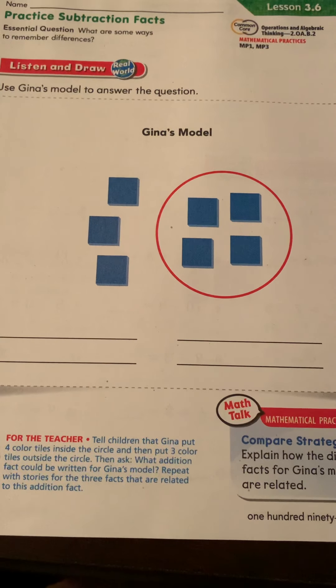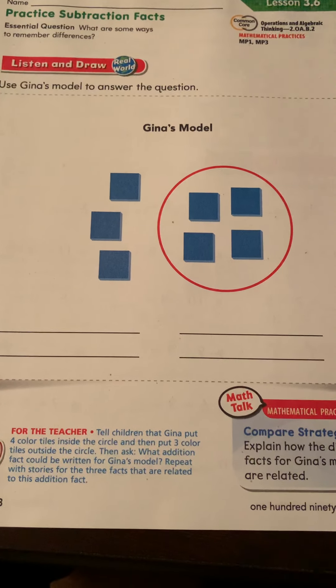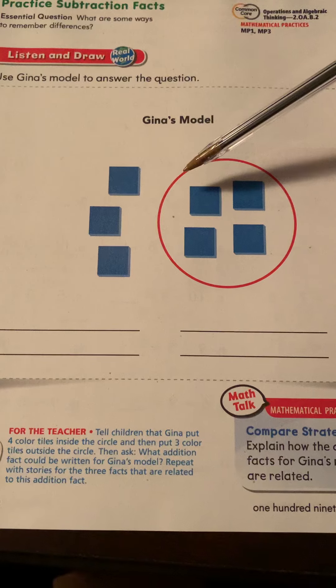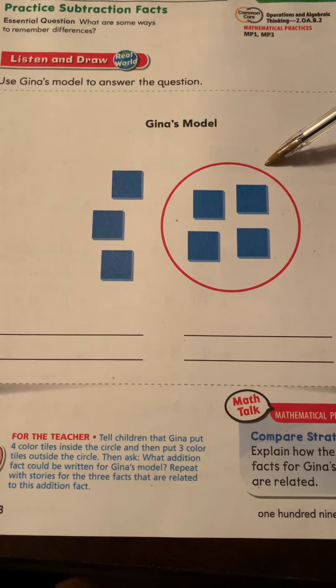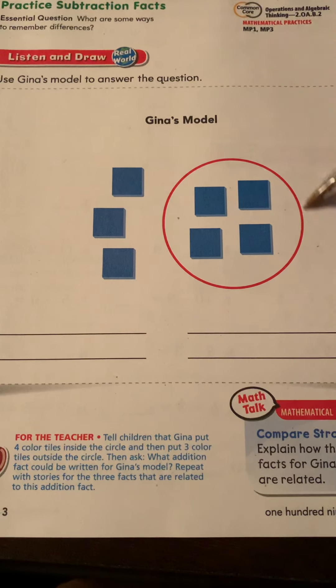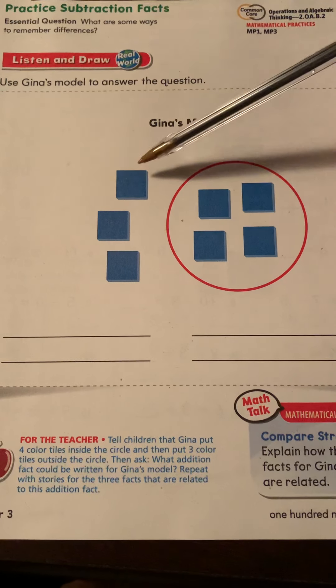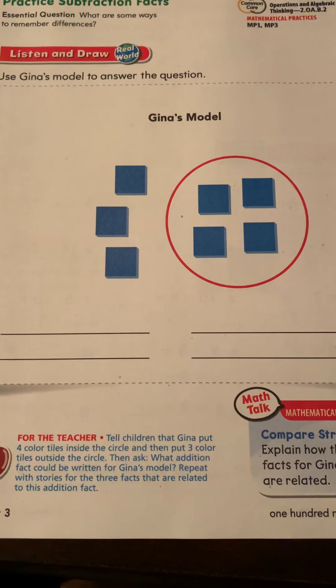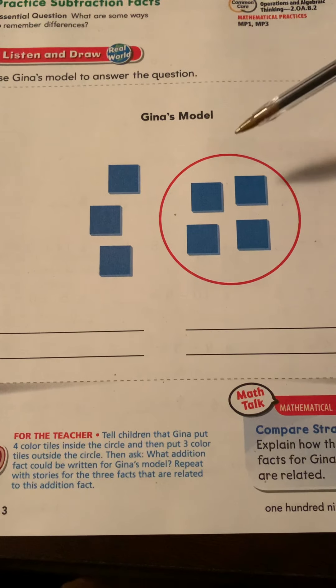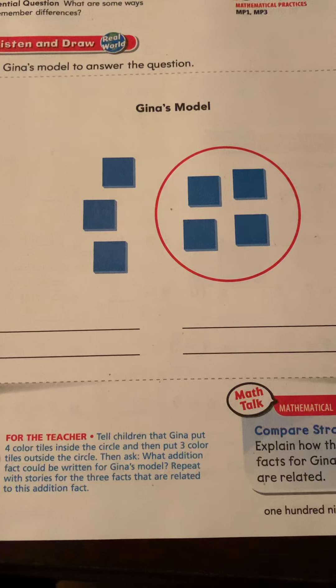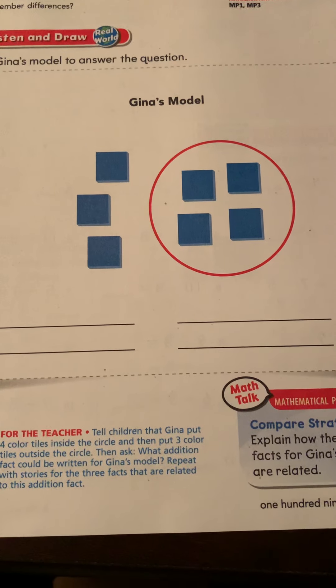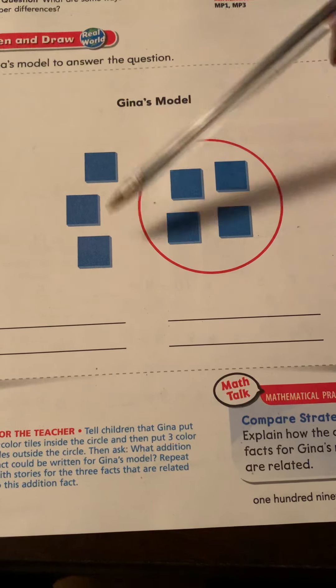This is the front page. So the story here is that Gina put four of her colored tiles inside the circle, and she put three of her colored tiles outside the circle. How many colored tiles does she have all together? You should hear that word all together and think that you want to count them all up.